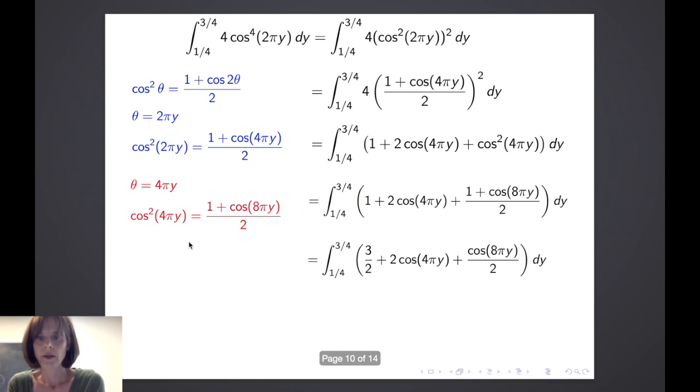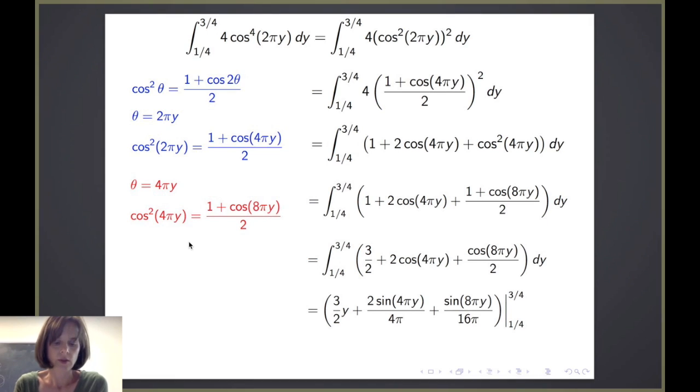We can combine the 1 and the 1 half, and we can now integrate. We get 3 halves y plus 2 times the sine of 4 pi y all over 4 pi plus the sine of 8 pi y all over 16 pi. If you'd like, you could make a substitution with u being 4 pi y and w equal 8 pi y if that's helpful to finish those integrals.